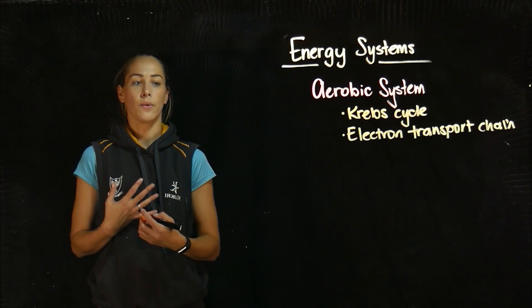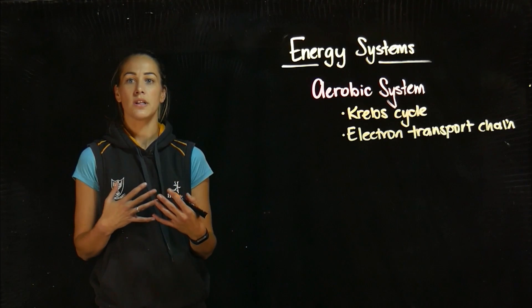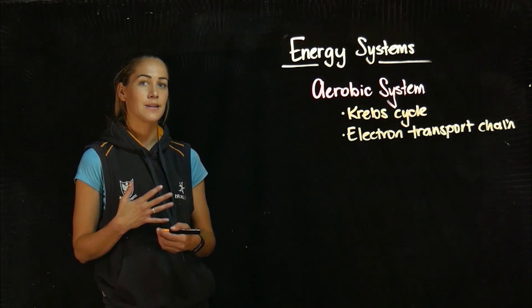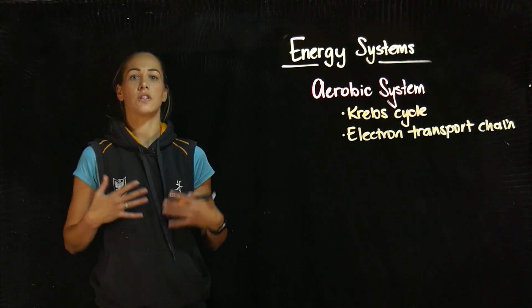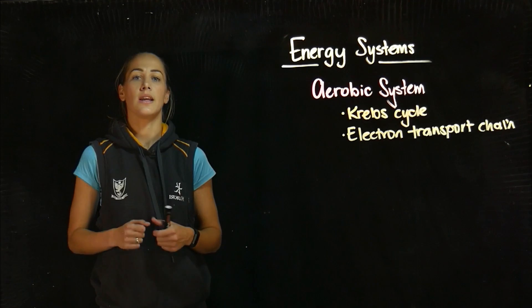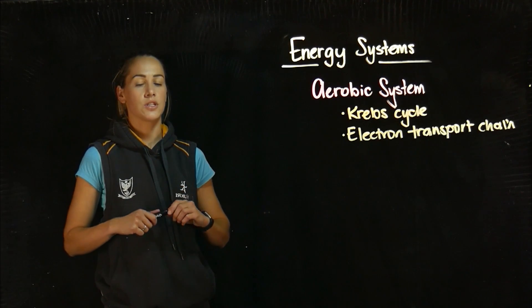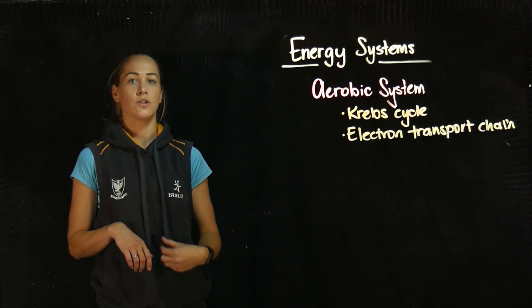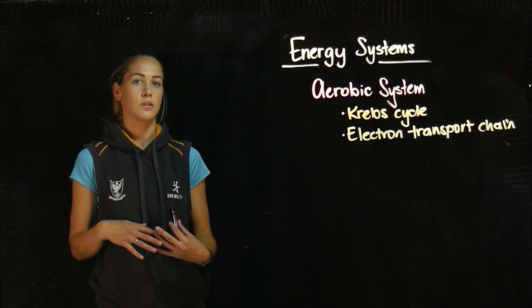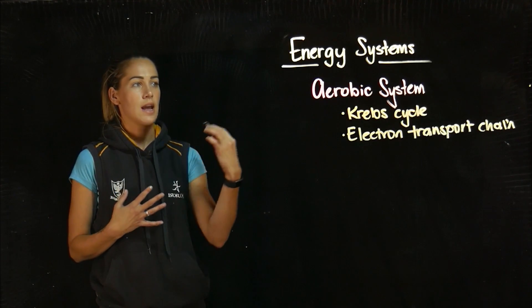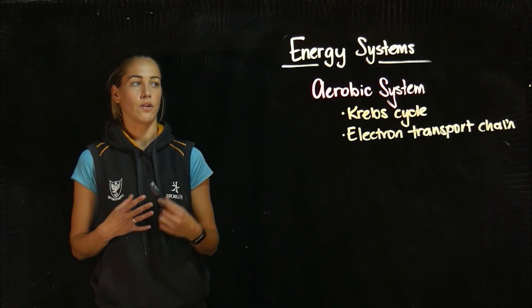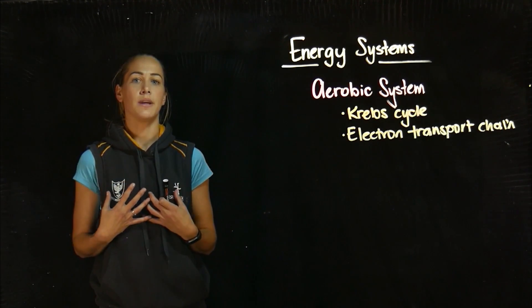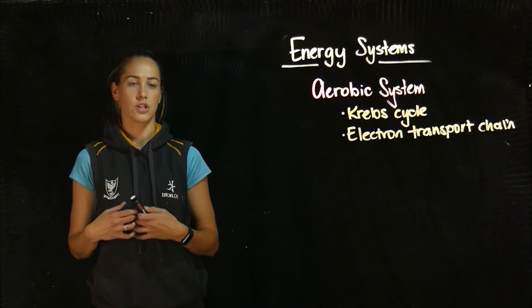We're at about two minutes of exercise with our glycolytic system and now oxygen is present. We need more oxygen to our working muscles. That system is depleted and your carbohydrate stores are depleted, so now we are going to move on to our aerobic system and get our ATP from oxygen.